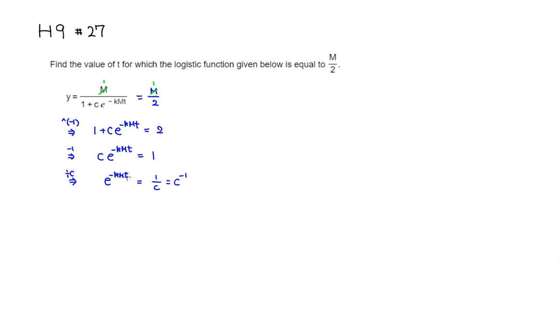Now we're looking for t. So I have to get rid of e. So we can just apply natural log to both sides. So you have natural log of e to the negative kmt is equal to natural log of c to the negative 1. And if you want, remember the property of a log? You can put this power right in front. So we can write it as negative natural log of c.